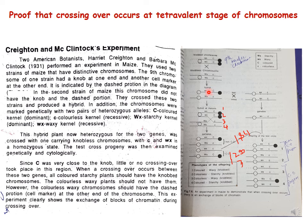They crossed these two strains and produced a hybrid. You can see in the diagram that when the first and second strains are crossed, a hybrid is produced. In the hybrid you can see it is heterozygous — one chromosome has the knob and the other does not; one end has the dashed portion and the other chromosome does not. In addition to these morphological markers, the chromosomes had two pairs of heterozygous alleles: C for colored kernel (dominant) and c for colorless kernel (recessive); Wx for starchy kernel (dominant) and wx for waxy kernel (recessive).